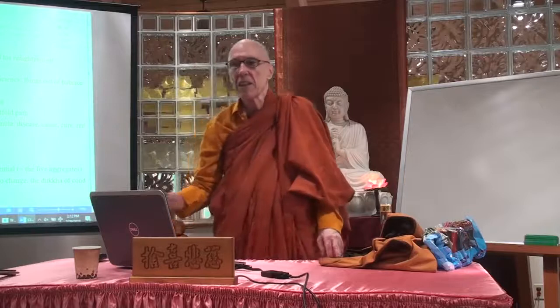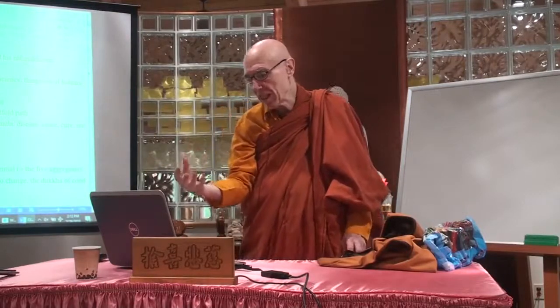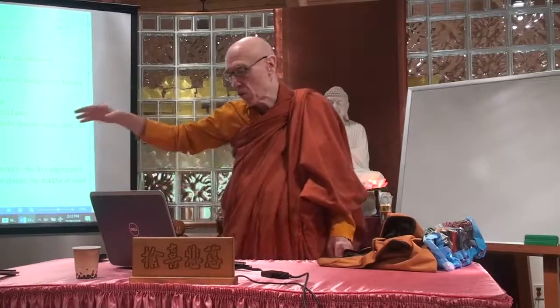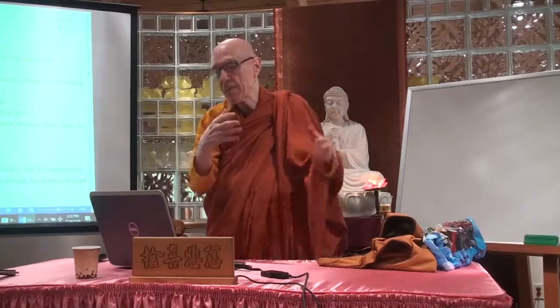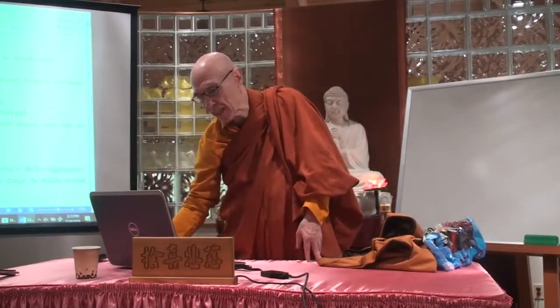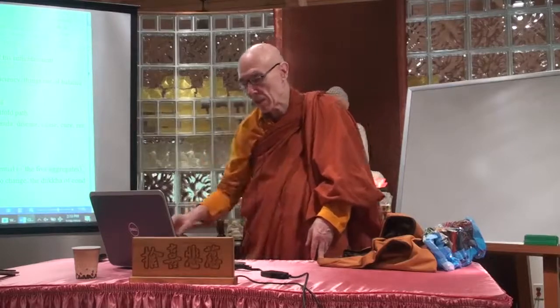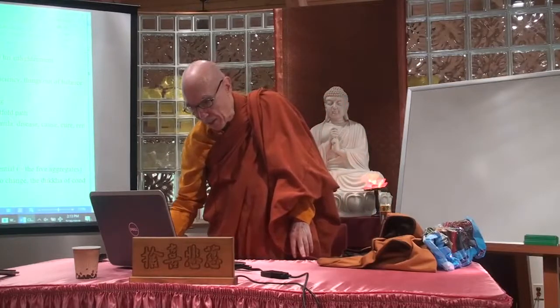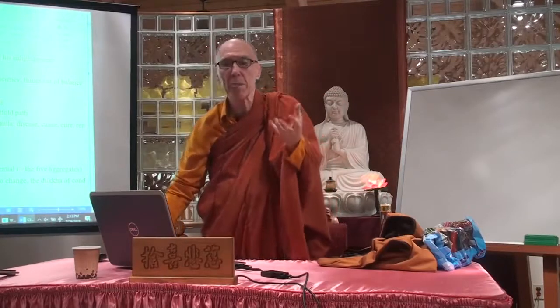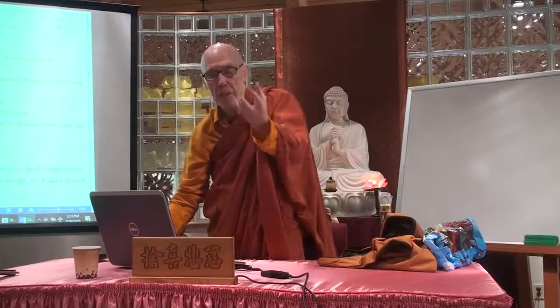The second noble truth is the inquiry into what is the origin of dukkha — what is the cause of this whole range of feelings that extend from intense suffering to this very subtle discontent. The answer the Buddha gives is craving. I want to show the structure or logic of the four noble truths first. We have the problem of human existence — the problem of dukkha — then the quest to find the underlying root, the origin of dukkha, which the Buddha pinpoints as craving.